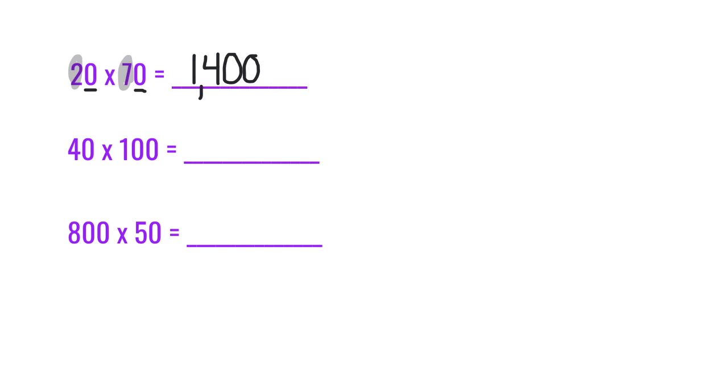Let's take a look at the next one. We have 40 times 100. So our basic fact will be 4 times 1, which is 4. And now we have 1, 2, 3 zeros total. So make sure we have three zeros in our product for 4,000.